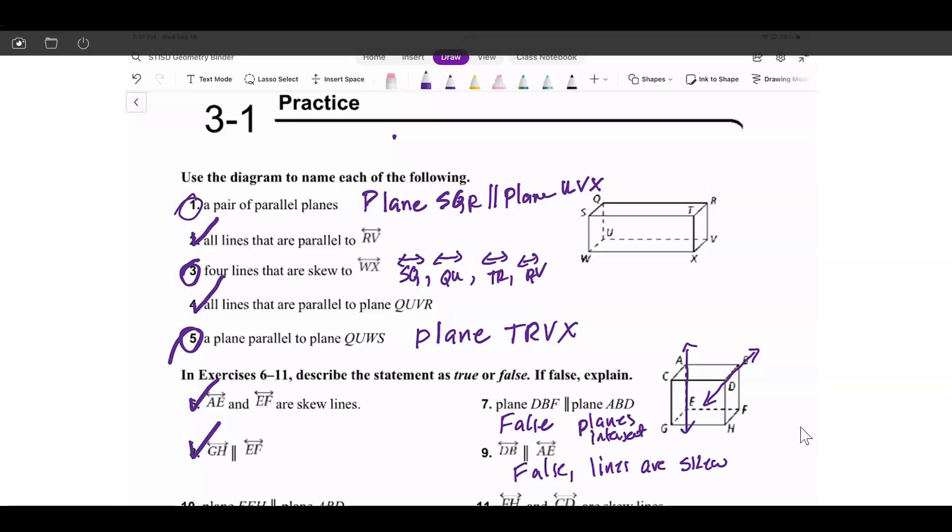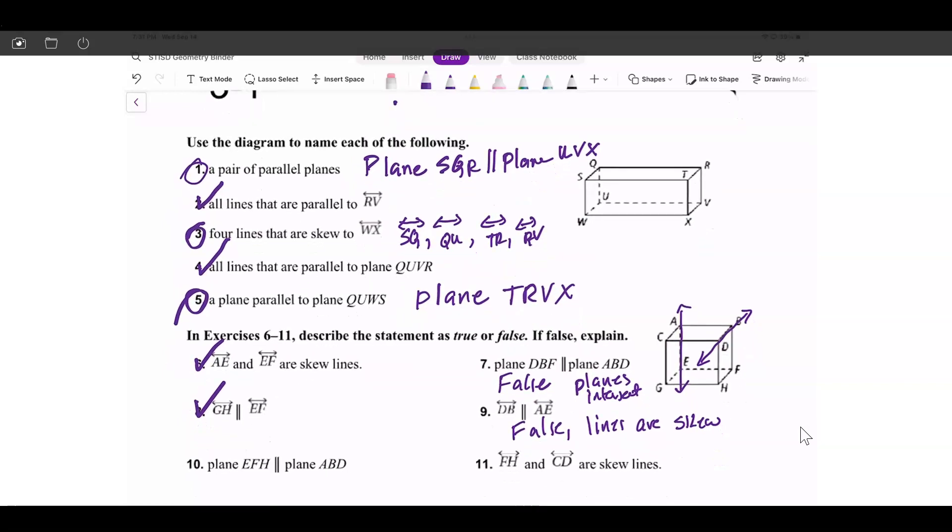Now we're going to go to number 11. Remember, I'm doing the odd, you're going to do the even. I'm going to erase again. We have line FH, which is right here, and we have line CD, which is right here. You can tell that if you look from the top, they're intersecting, but they're not, so they are skewed, so that is true. Both lines are skewed.